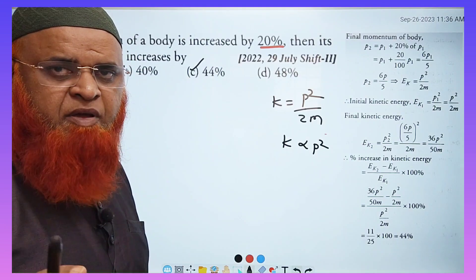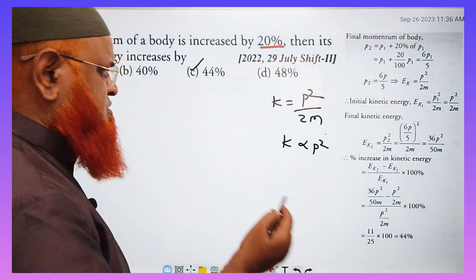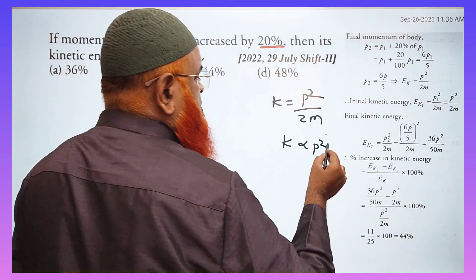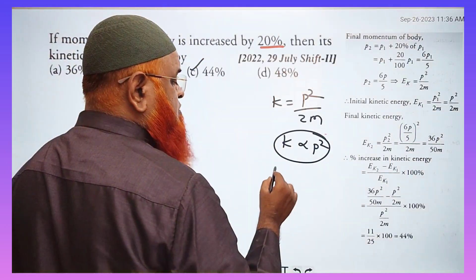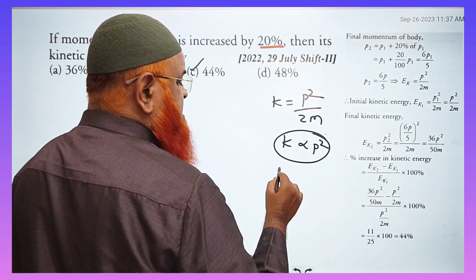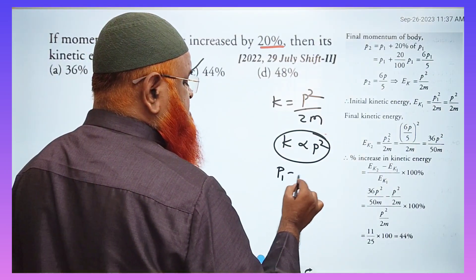Okay, without any pen and paper. But I will tell you how to solve it. So you all know that momentum is going to be increased to 120%. Then what happens here now? So momentum P1 is P.